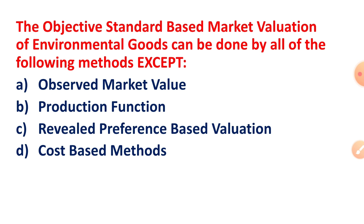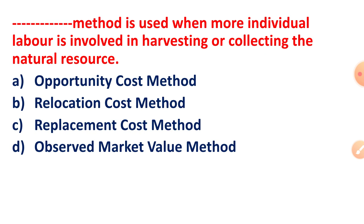The right answer is Option C: revealed preference-based valuation.